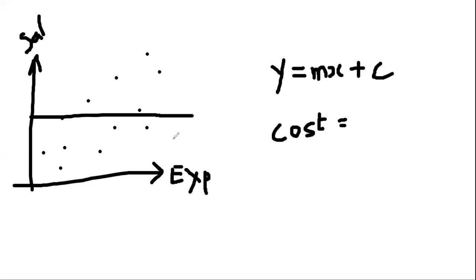We need to know the distance between the actual and predicted points. For example, if a person has four years of experience, the actual salary might be 10,000 dollars, but if our prediction line predicts 8,000 dollars, we have an error of 2,000. For each and every point, we need to calculate this cost. The cost function uses the formula: y-hat minus y_i, where y_i is the actual point and y-hat is the predicted point.